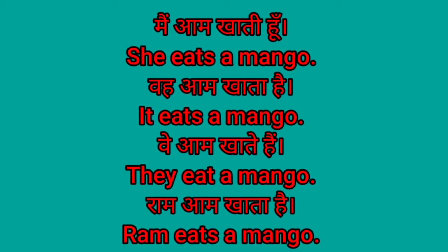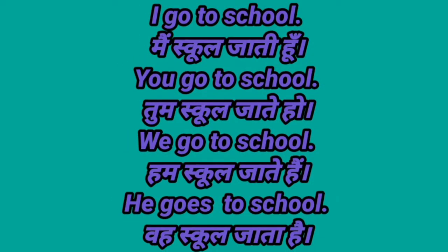Woh aam khati hai — She eats a mango. Woh aam khata hai (it) — It eats a mango. Woh aam khate hain — They eat a mango. Ram aam khata hai — Ram eats a mango. I go to school. You go to school. We go to school.